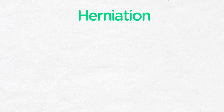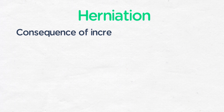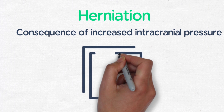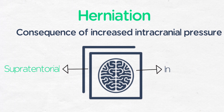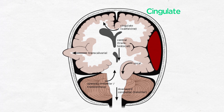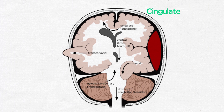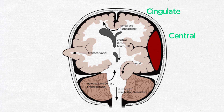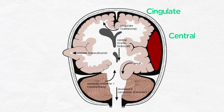Herniation is a potentially deadly consequence of increased intracranial pressure, and it can be divided into supratentorial and infratentorial types. Supratentorial herniation can be divided into several types. The first is called cingulate or subfalcine herniation, where pressure pushes the cingulate gyrus under the falx cerebri. Central or transtentorial herniation is when the brain is pushed downward past the tentorium cerebelli.